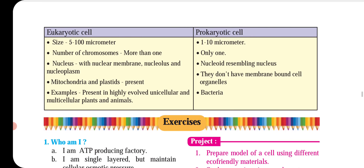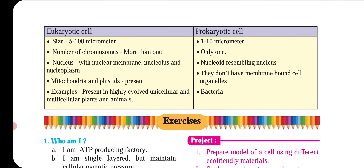If you compare the cells, the eukaryotic cell size is 5 to 100 micrometers. The prokaryotic cell is 1 to 10 micrometers — very small. Eukaryotic cells have many chromosomes present. In the prokaryotic cell, there is only a single chromosome. The nucleus has a nuclear membrane, nucleolus, and nucleoplasm in eukaryotes.